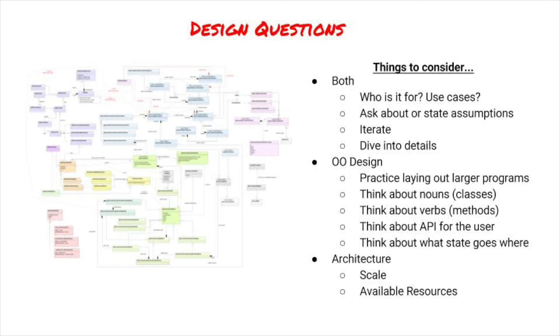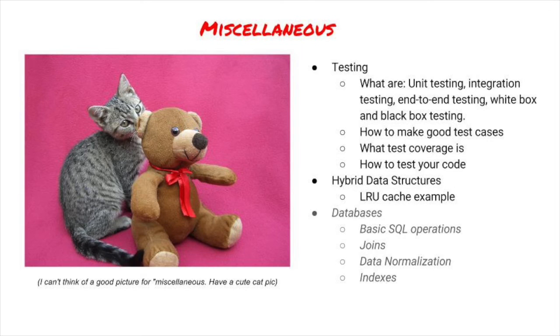There are a few other topics to know about. You should know about testing. At a minimum, you should know what various types of testing are: unit tests, integration tests, end to end tests, white box, black box. You should know how to construct good test cases. You should know what test coverage is. And you should think about how to test your code for any code you make. Testing is highly important to top companies. Making your code as bug free as possible is essential when outages have huge impact.